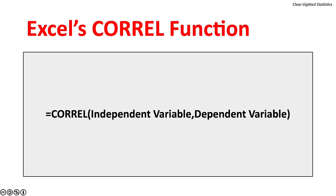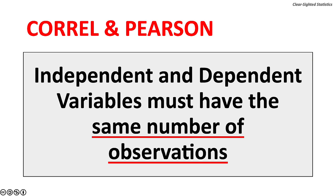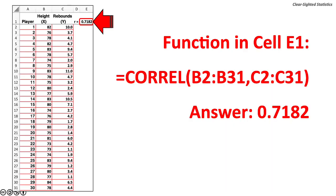Excel's CORREL function has two arguments: the first is the range of cells with the independent variable, and the second is the range of cells with the dependent variable. Excel also has an older Pearson function, but it may be subject to rounding errors. Both functions require the independent and dependent variables to have the same number of observations, and both ignore text and logical values. For this example, the CORREL function in cell E1 returns 0.7182, or 71.82 percent.